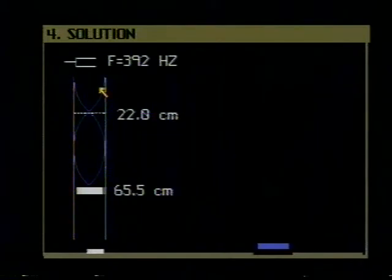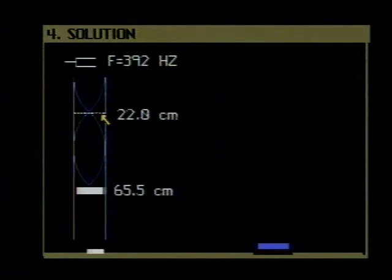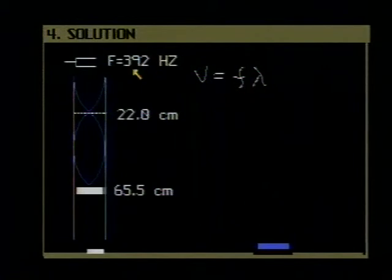We have in this problem essentially a closed pipe, a pipe closed at one end with a variable length which resonates at two different lengths to the frequency 392 hertz. We're asked to find the velocity of sound in this tube. The velocity of sound in the tube is equal to the frequency of the sound multiplied by the wavelength. The frequency is 392 hertz. The wavelength we don't know but we can find.